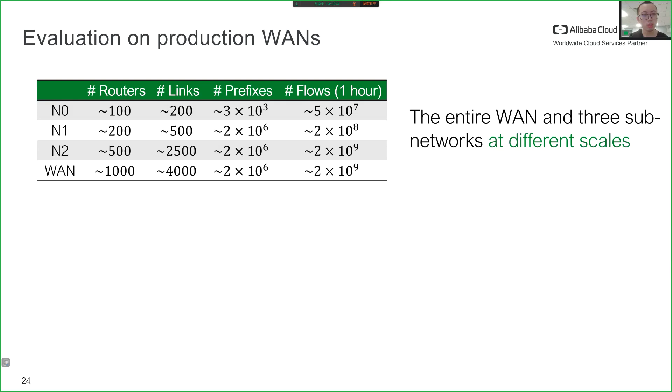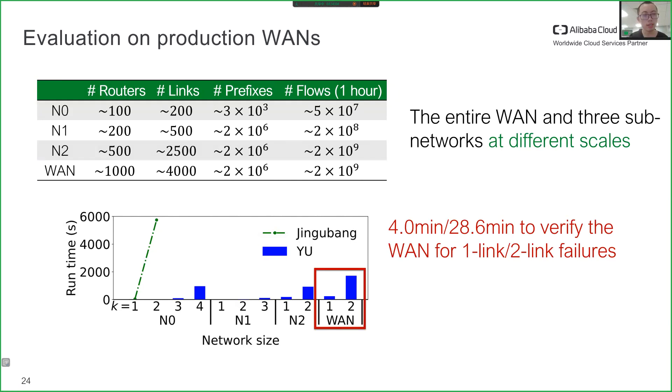We evaluated Yu's performance on networks of various sizes, including the production WAN and three sub-networks. Yu takes less than five minutes to verify the entire WAN for one link failure, and less than 30 minutes for two link failures. Yu is 448 times faster than Jingubang, a network verifier for two link failures.